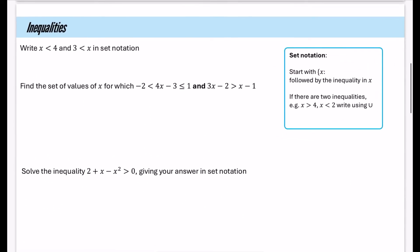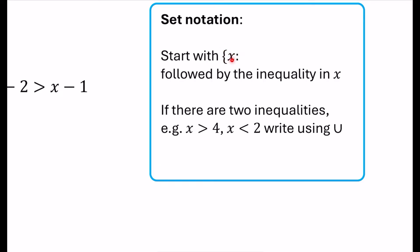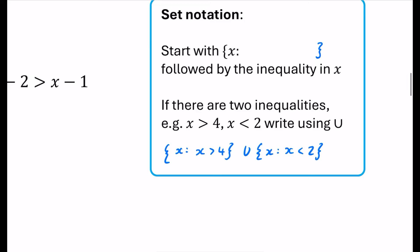Next we're going to look at inequalities, beginning with set notation. You start with a curly bracket, put the variable and a colon, then write whatever inequality you have, and close with a curly bracket. If you have two inequalities that cannot be combined — for example, x is greater than 4 or x is less than 2 — you cannot write them as a single inequality. Instead, you use the union symbol (the U shape from GCSE Venn diagrams). But if they can be written as a single inequality, union notation isn't needed.